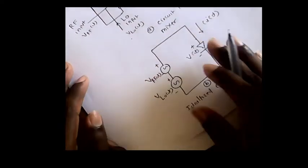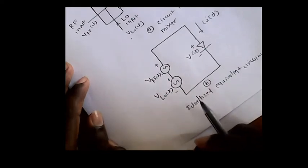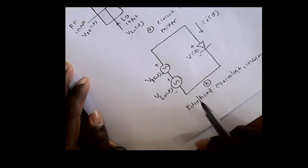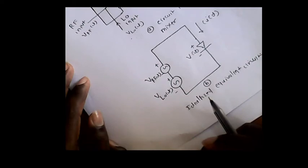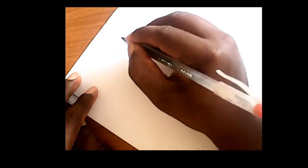The AC equivalent circuit will be shown here as Figure C, where the RF and local oscillator input voltages are represented as series-connected voltage sources. Let V_RF be the input voltage in cosine form. So we write down the first voltage equation.